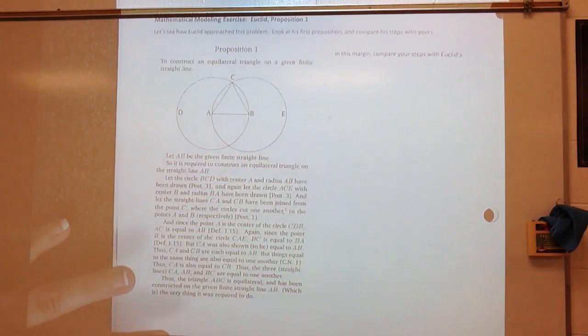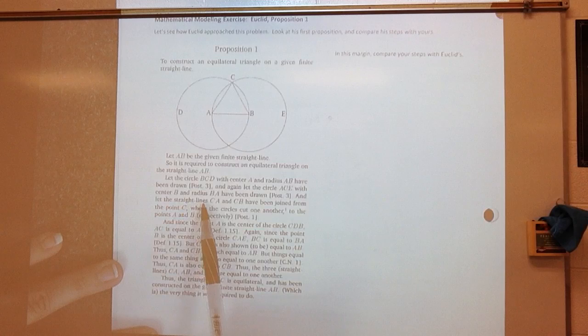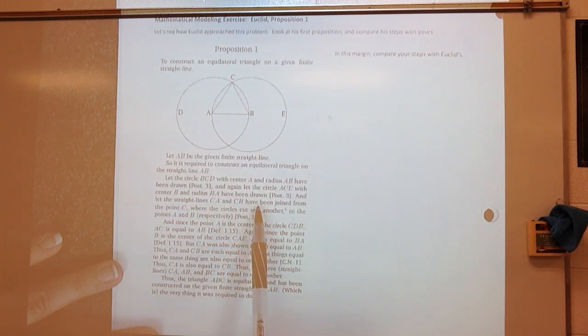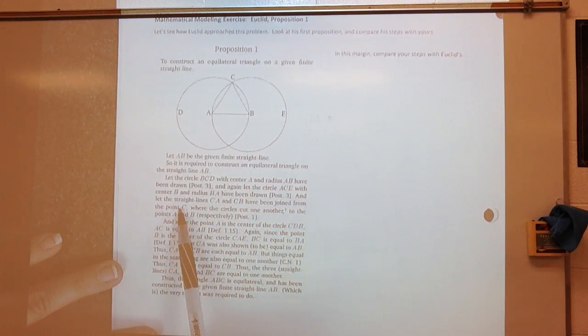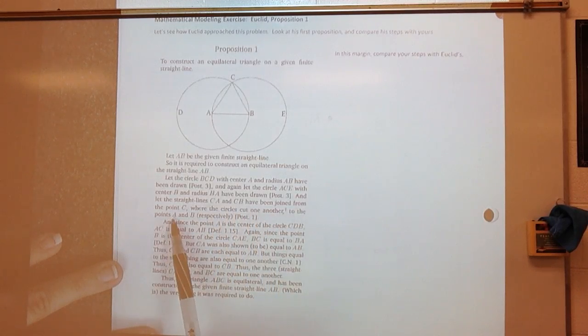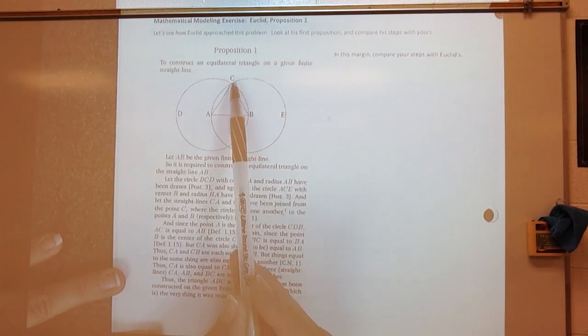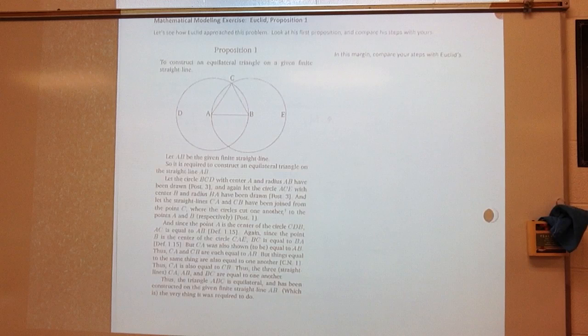Let the circle BCD with center A and radius AB have been drawn. And again, let the circle ACE with center B and radius BA have been drawn. All right, so, in other words, they went ahead and drew full circles. Now, our paper was not big enough to draw full circles. We drew half circles. Let the straight lines CA and CB have been joined from the points C, where the circles cut one another, to the points A and B. So, it says, okay, here we go. We've got a point that comes together.